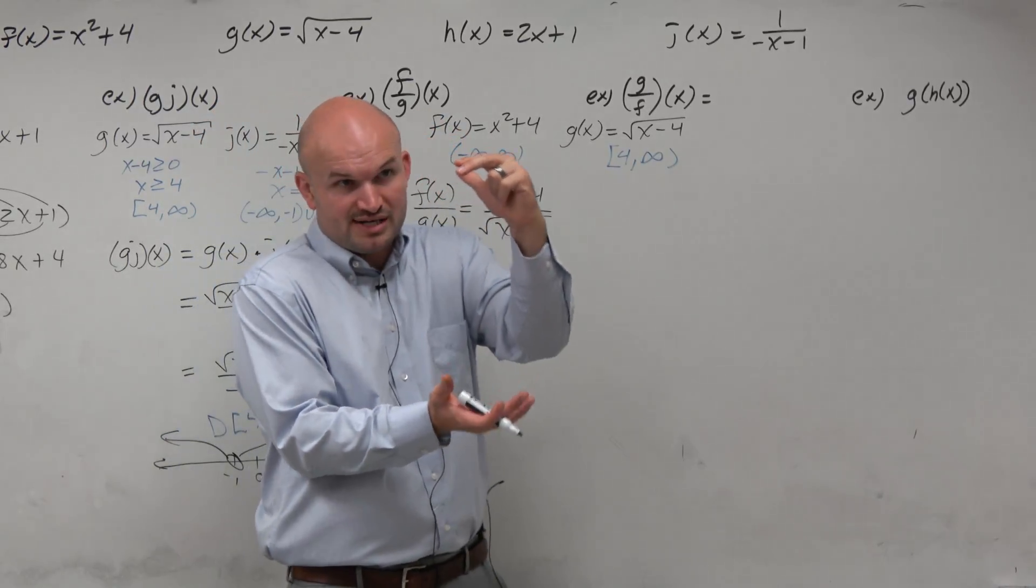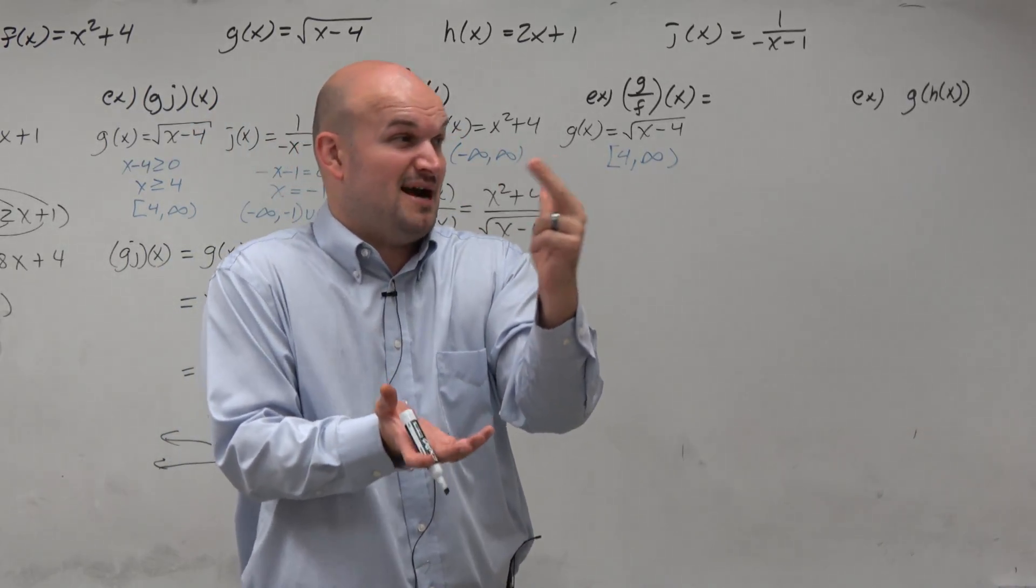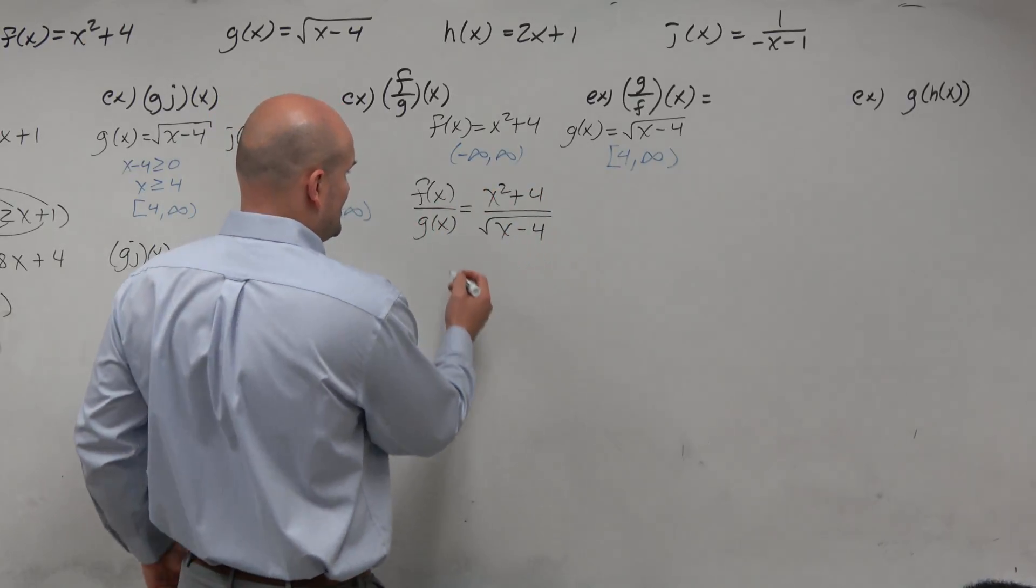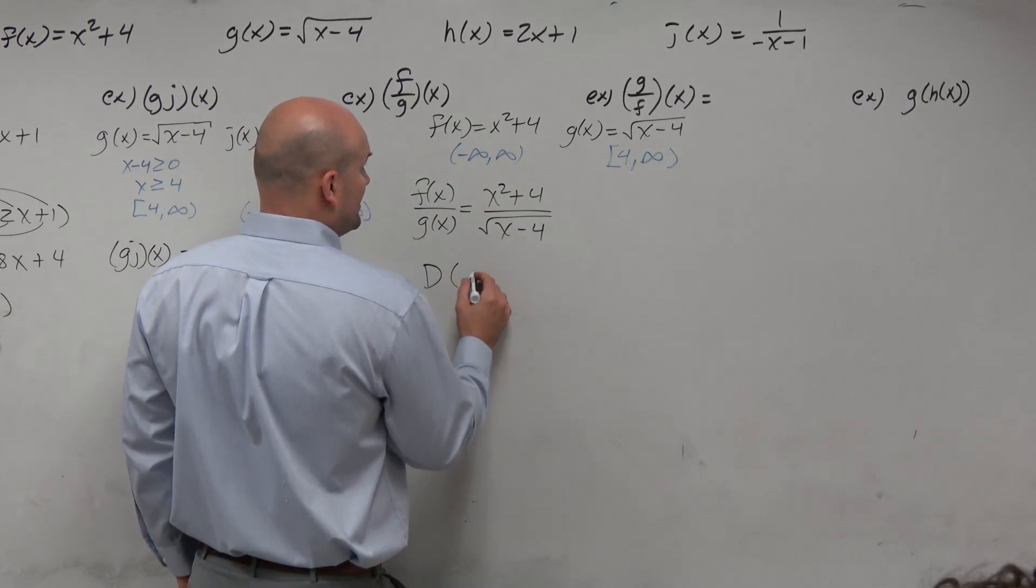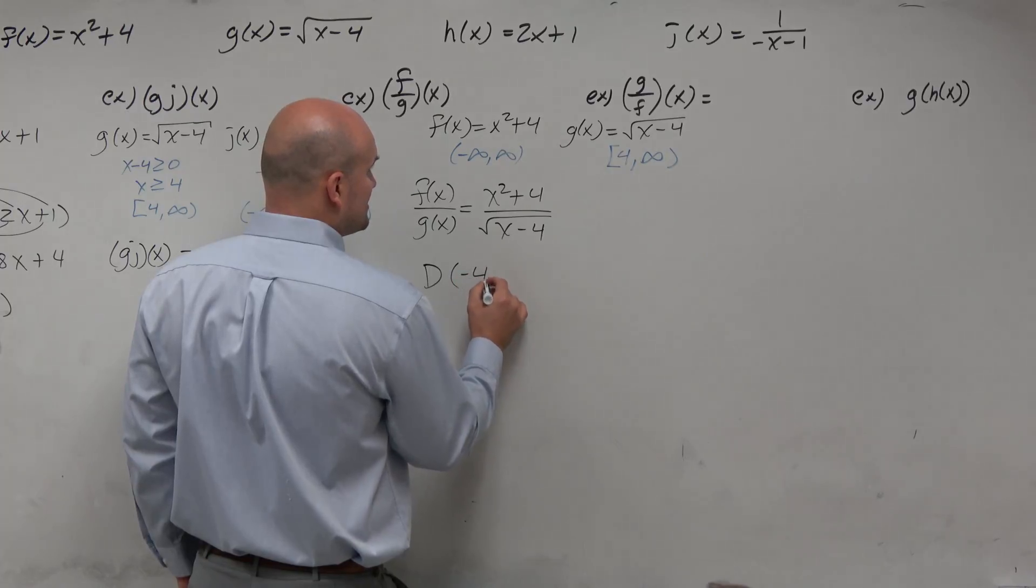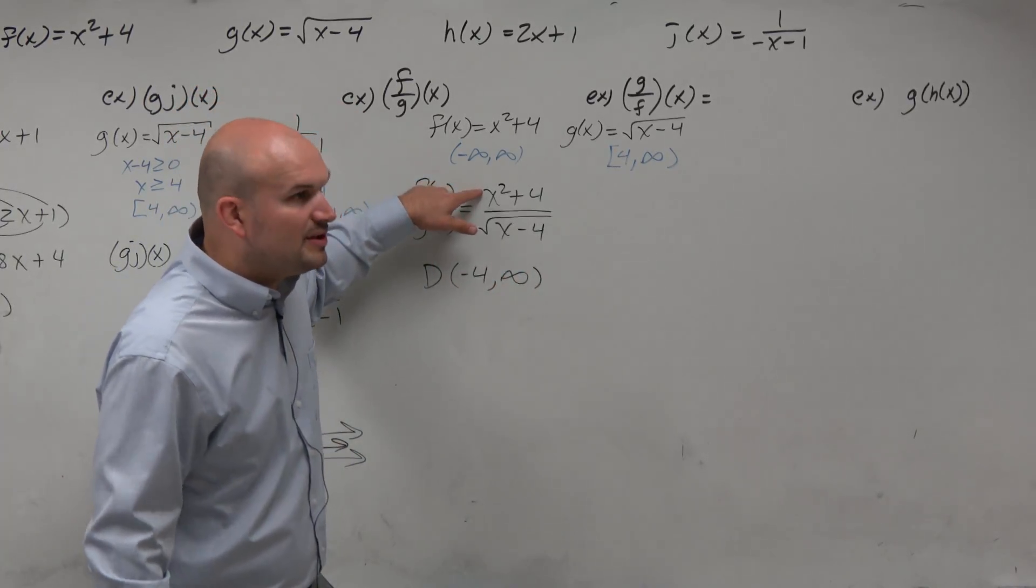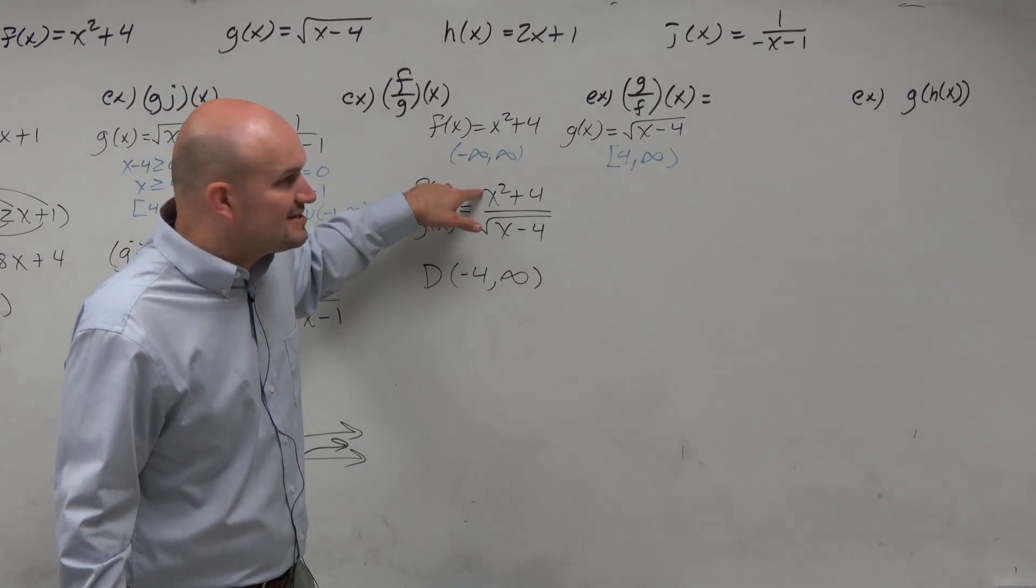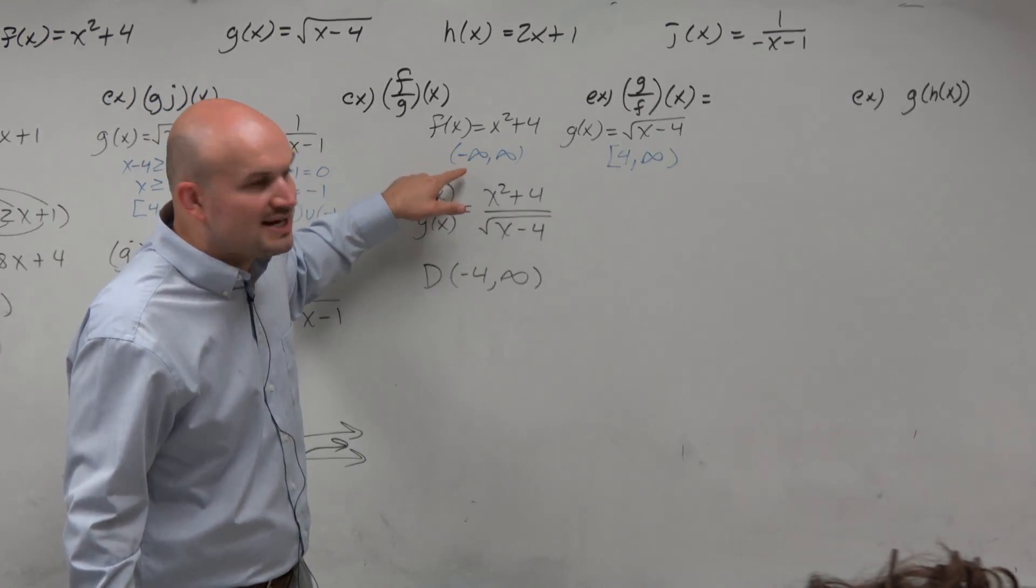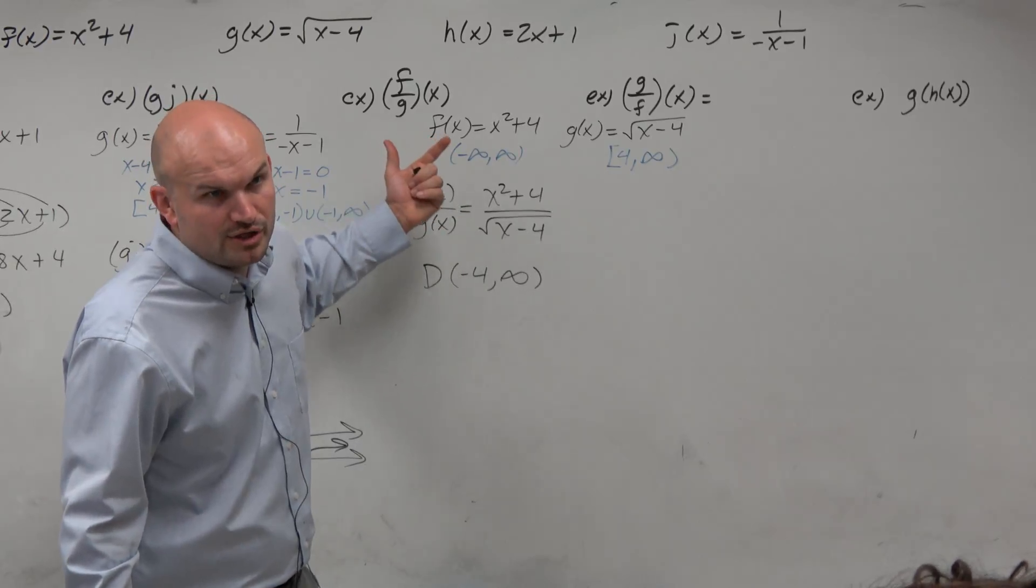So you have to understand division brings in that extra constraint that, oh, crap, now we could possibly be divided by 0. So the domain here is going to be parentheses 4 comma infinity, right? The x squared plus 4 doesn't affect the domain, because guys, that's all real numbers, right? There's no restrictions on x squared plus 4, right? So we're good there.